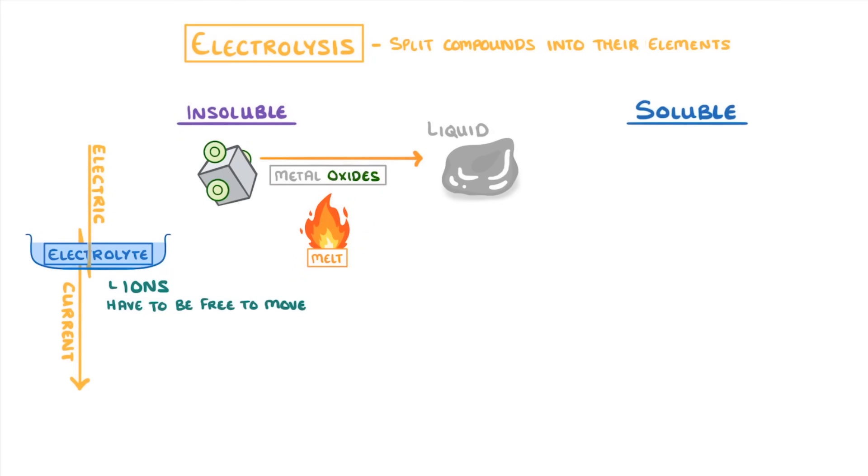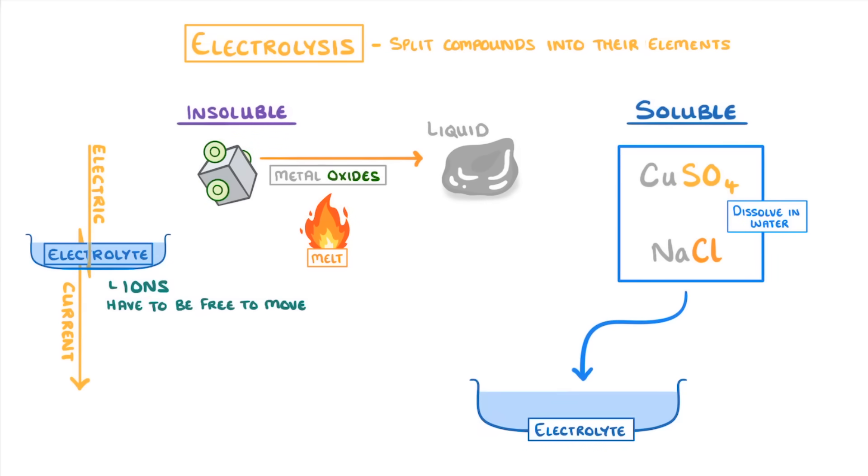However, for soluble compounds, like copper sulphate and sodium chloride, we can just dissolve them in water to make our electrolyte. So in today's video we're going to see how the electrolysis of these aqueous solutions works.